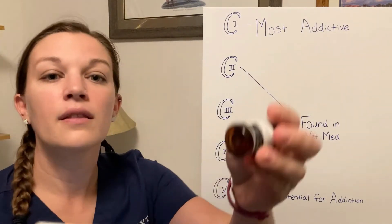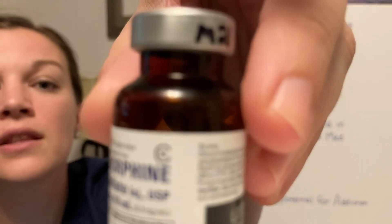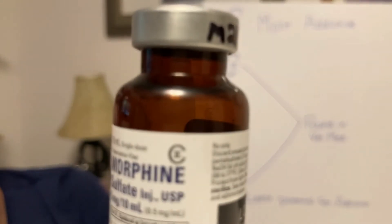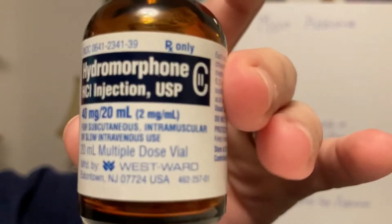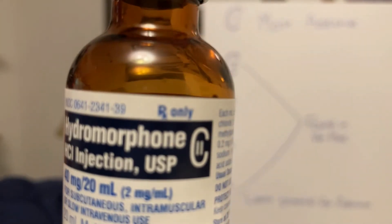So this first one here — you'll see the drug name, morphine, and then the C2 beside it. The next one I have here is also a C2: hydromorphone, and it's a C2.